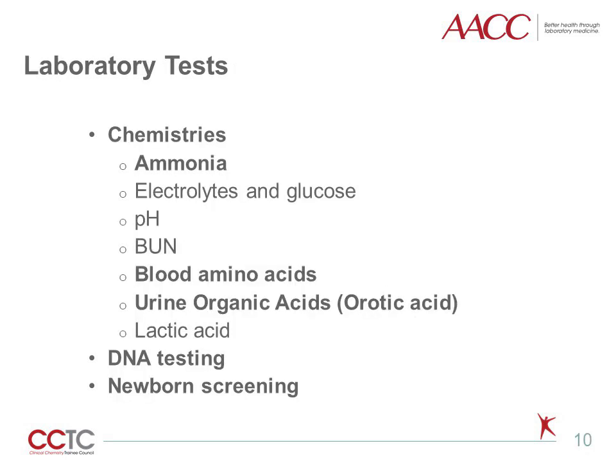For laboratory results, elevated ammonia greater than 100 to 150 micromoles per liter is a hallmark of UCDs. Hyperammonemia in the context of normal glycemia and normal anion gap is a strong indicator of urea cycle disorders. The biochemical genetic tests of blood amino acids and urine organic acids can be important in differentiating which specific UCD is present, with faster turnaround time than molecular tests. These biochemical genetic tests are first-line, along with ammonia, and can distinguish if the hyperammonemia etiology is UCDs or other genetic causes, such as certain organic acidemias or fatty acid oxidation defects. Lactic acid can help rule out disorders of pyruvate metabolism.